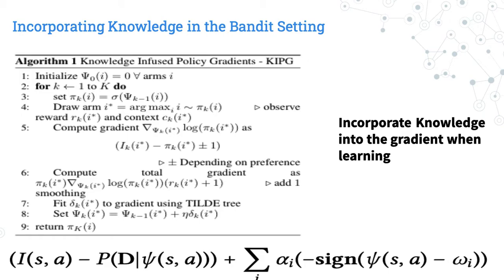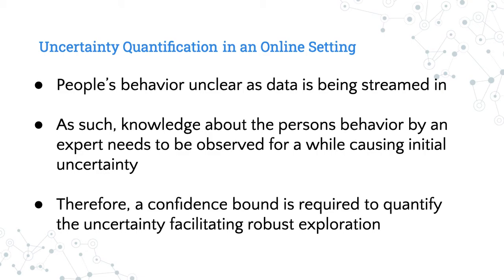How do we quantify the exploration criteria in an online setting, and why would uncertainty occur? Like I said already, the behavior is unclear while data is being streamed in until you see enough amounts of it. Even if there's a human who is familiar with the system, or let's say they're watching people click around in the recommendation system, they would need some time to observe the user before being sure what type of knowledge they want to give to the system. This would cause initial uncertainty. A confidence bound, like the upper confidence bound, would be useful in this kind of setting.